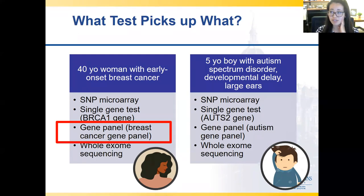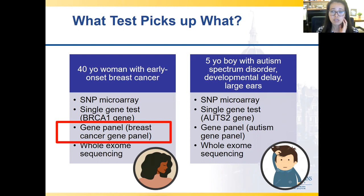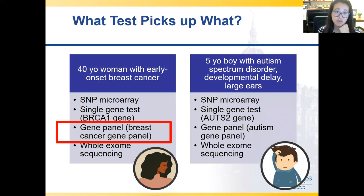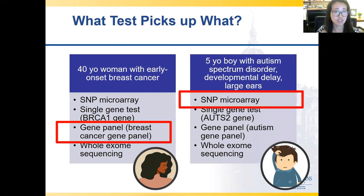For a five-year-old boy with autism, developmental delay, and large ears — you're trying to assess for 22q deletion syndrome. What test would you do? A SNP array would be best to assess for a chromosome deletion syndrome. Whole exome sequencing could also eventually be appropriate, and there is some data suggesting whole exome sequencing might be higher yield than a SNP array as a first-line genetic test. But specifically to assess for 22q, single gene sequencing wouldn't pick that up because it's used to detect single gene variants.